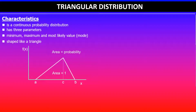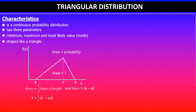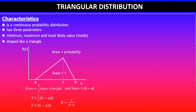The shaded area denotes the probability, and the total area equals one - the total probability. The area of a triangle is half the base times height. The base is given by b minus a, so: 1 = ½ × (b − a) × height. Multiplying both sides by 2: 2 = (b − a) × height, which rearranges to height = 2 / (b − a). This is the maximum height of the triangle.